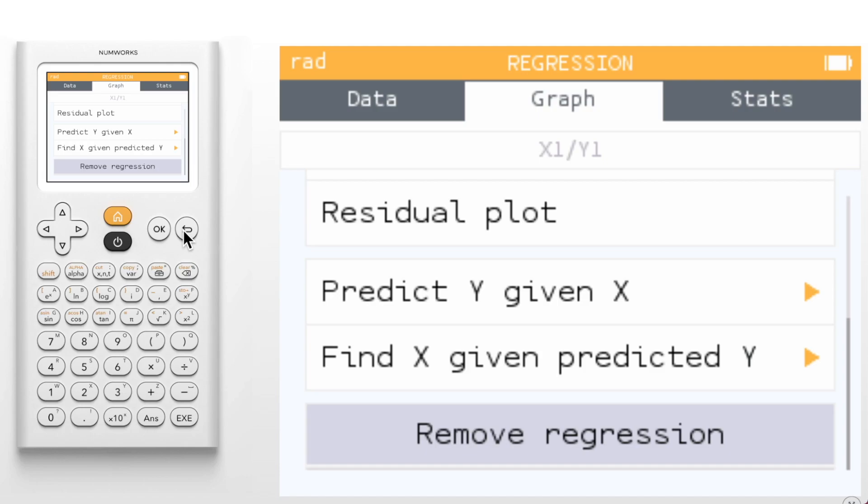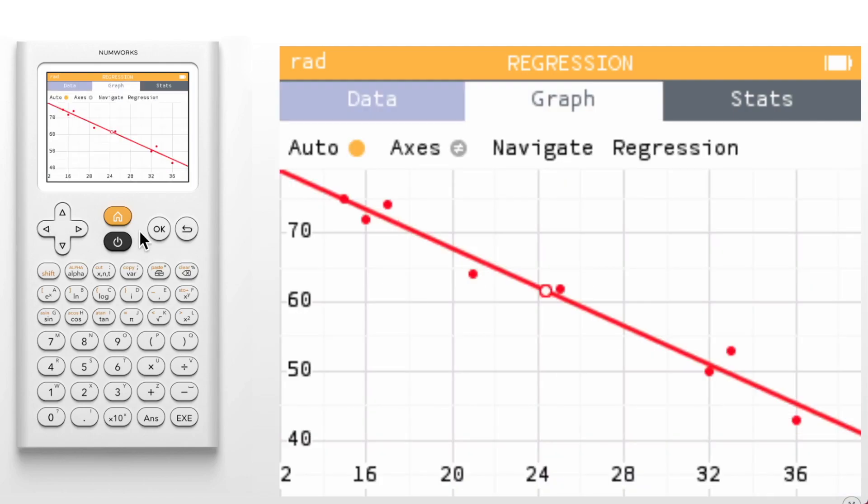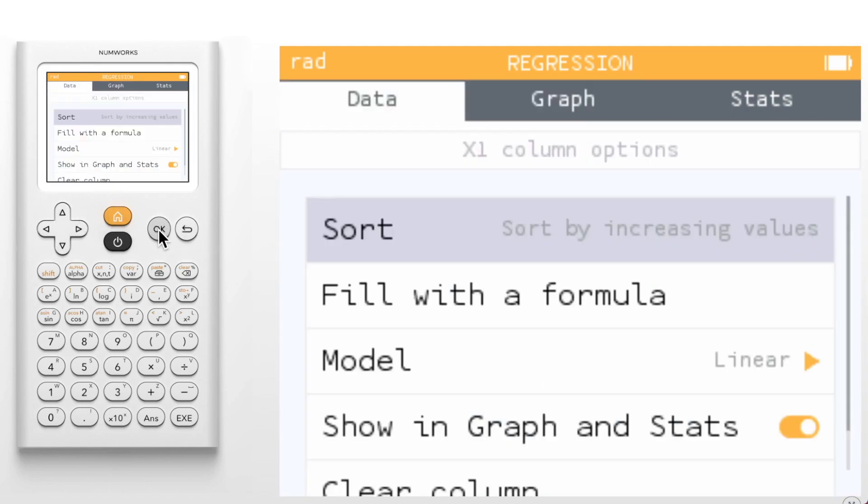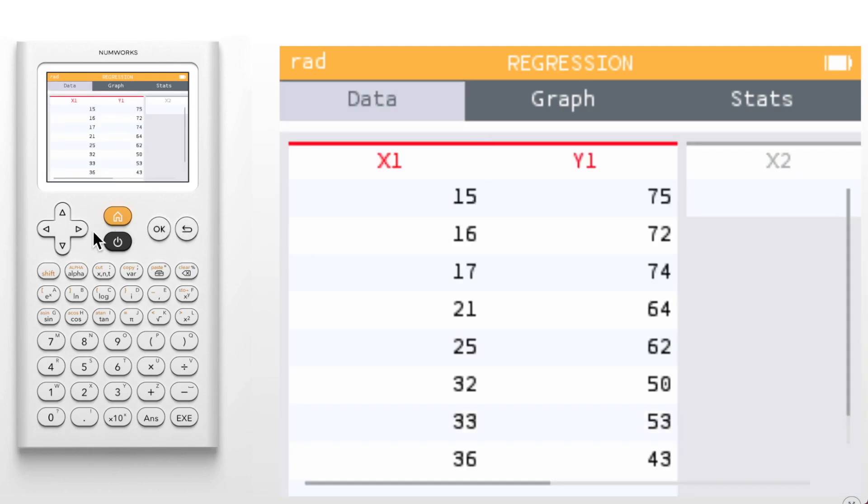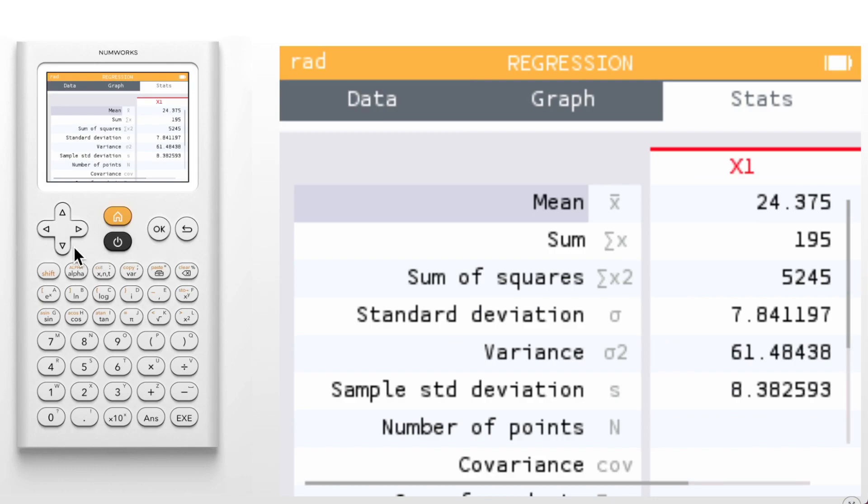Just like with the statistics app, a data set can be created using formulas and lists and data sets can also be turned off so that they are not viewable in the graph and stats tab. Both of those would be available in the column options. On the stats tab, you'll notice that the sample standard deviation has been added as well as symbols for each component.